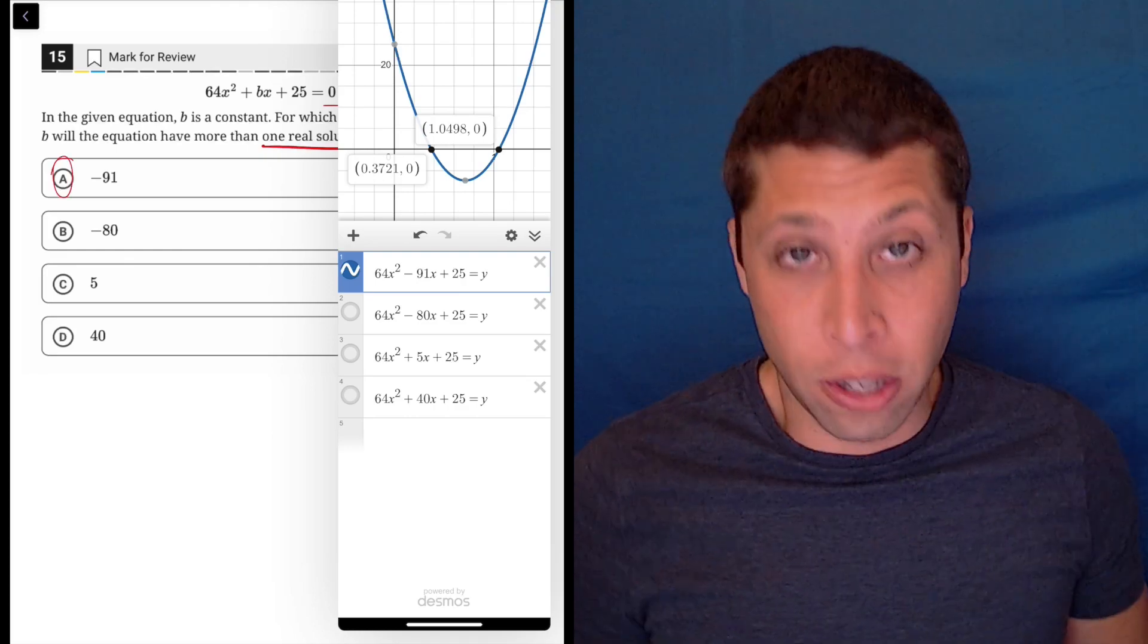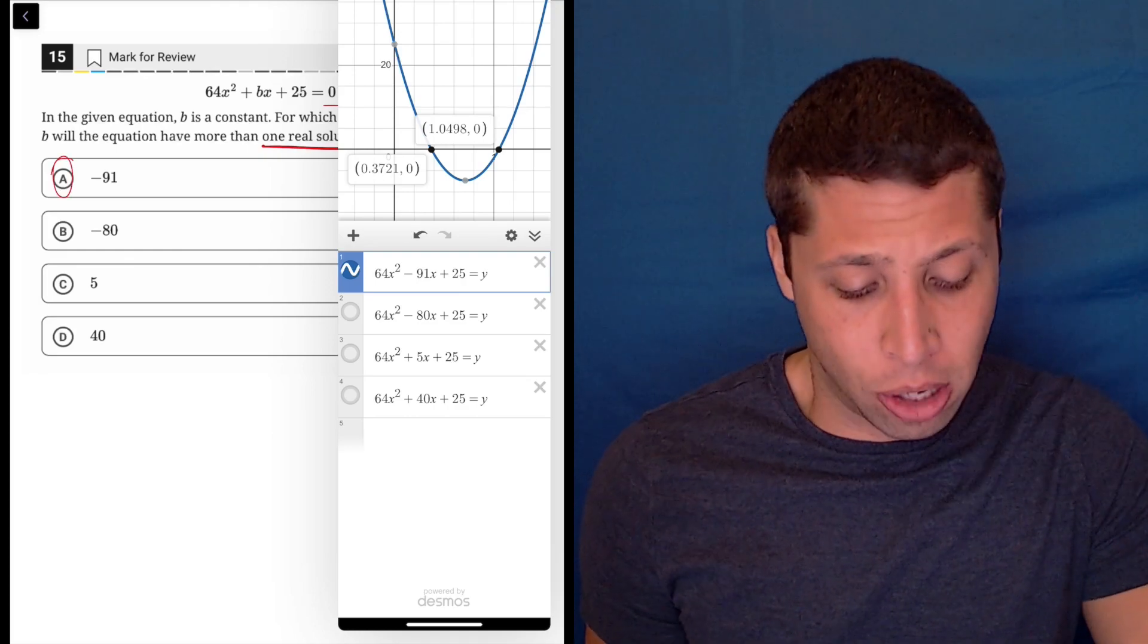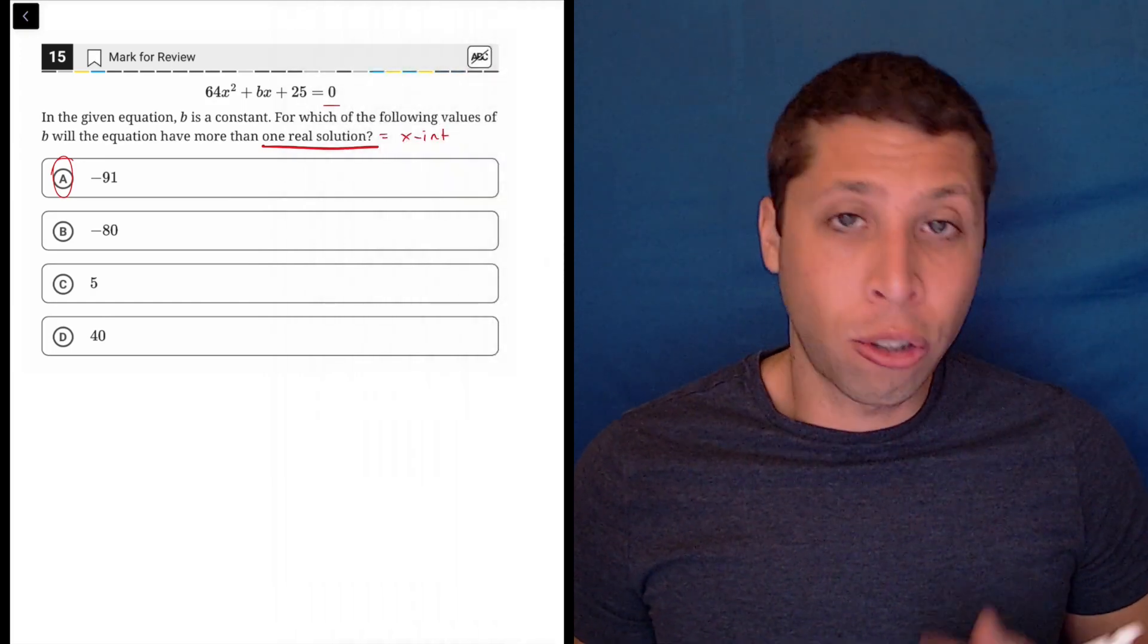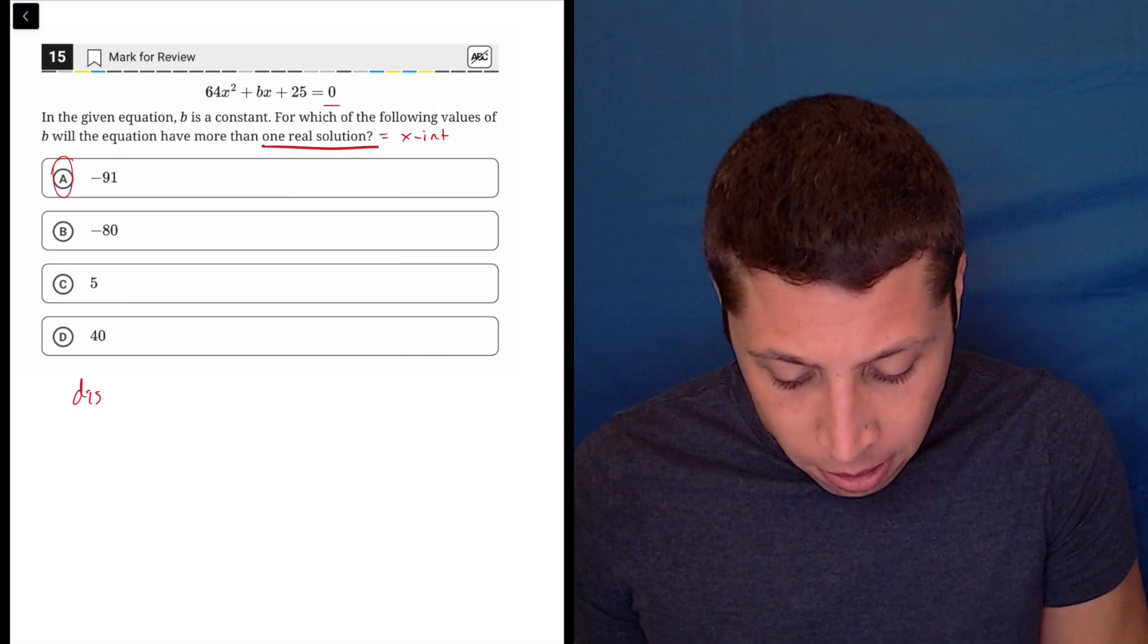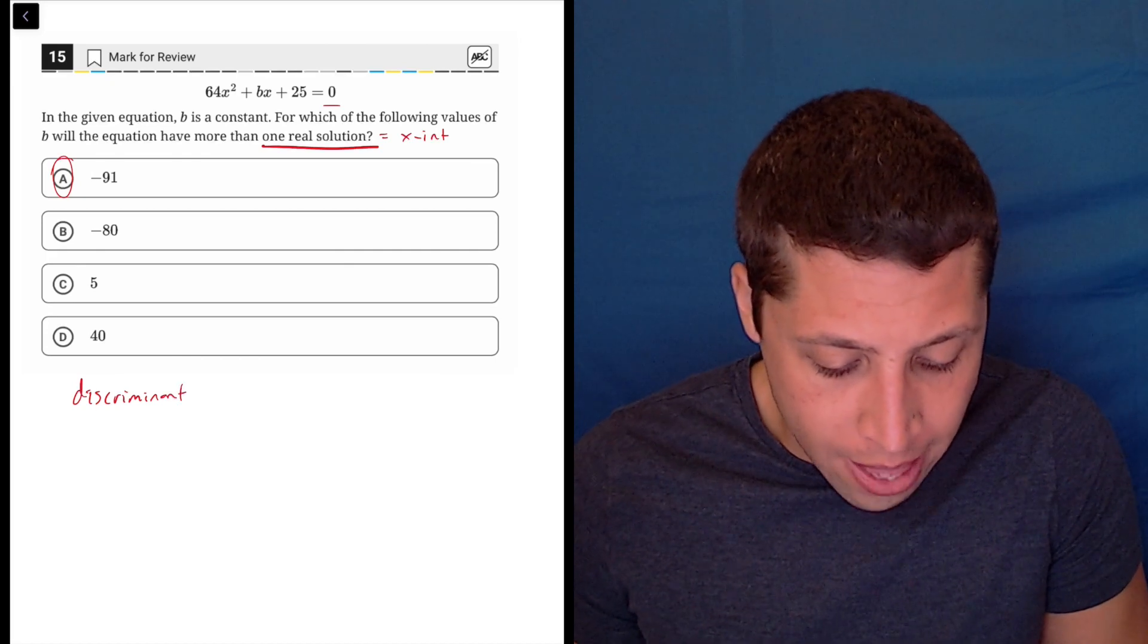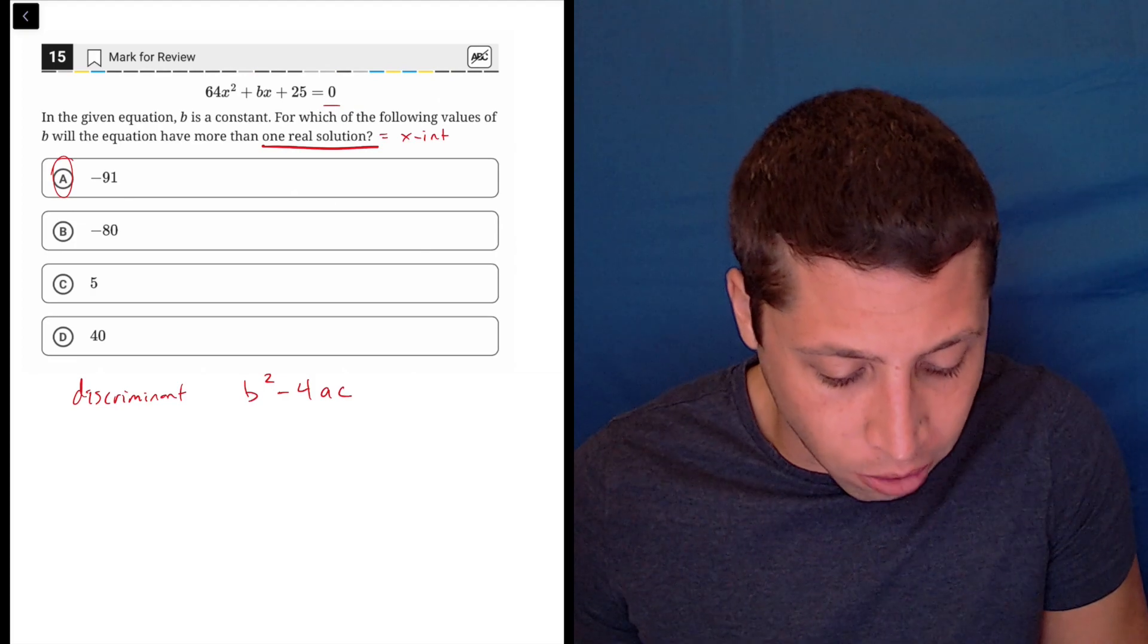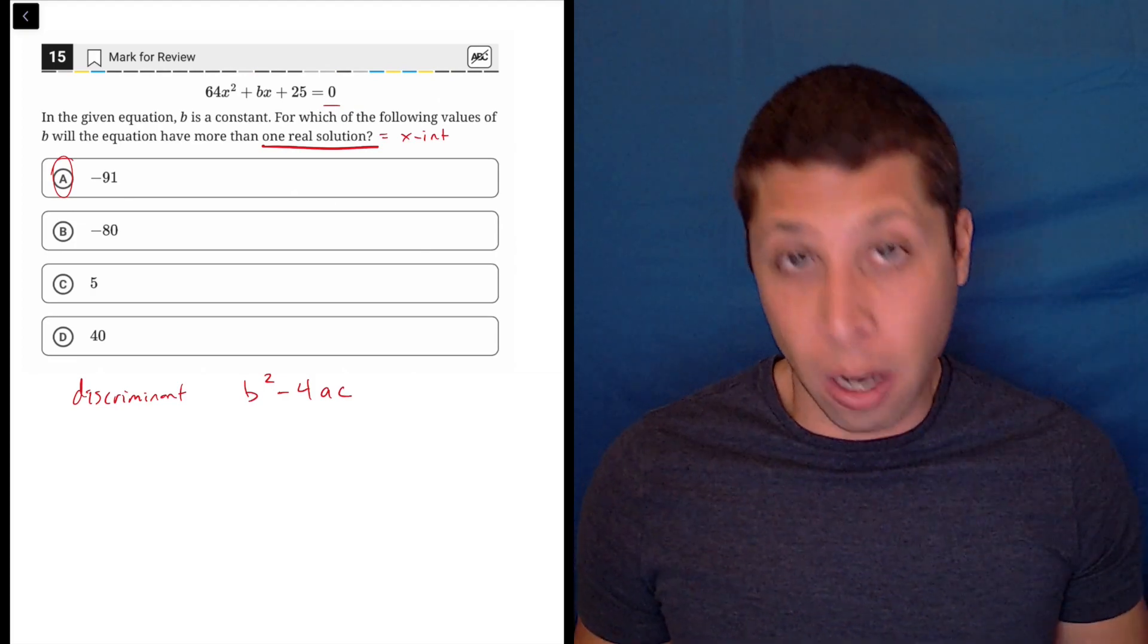If that is confusing to you, we do have an algebra way to do this that might be easier, honestly. Here's what that would entail. When we are trying to find the number of solutions to a quadratic, we are going to use the discriminant, which is a piece of the quadratic formula that tells us the number of solutions. It is b² - 4ac.